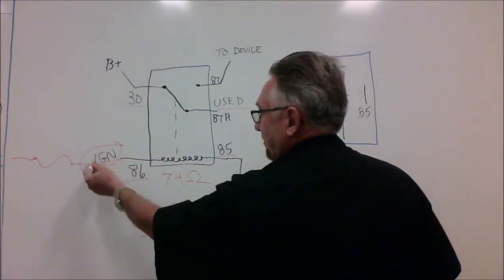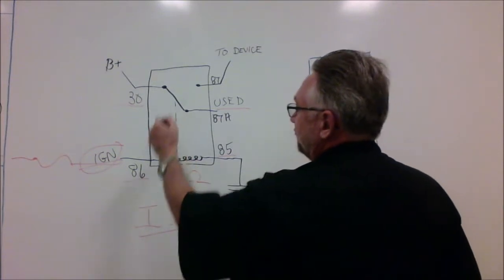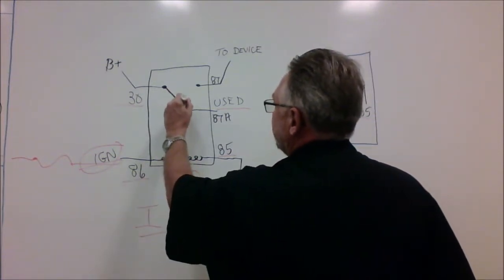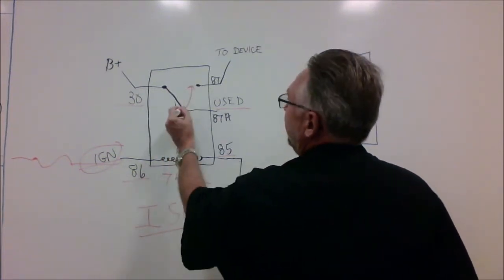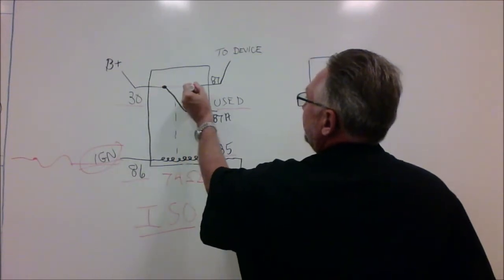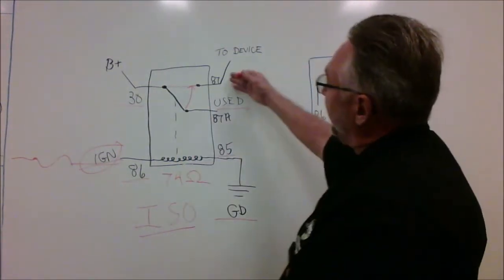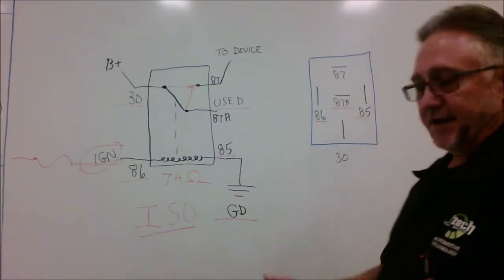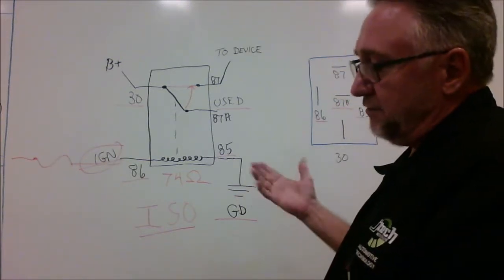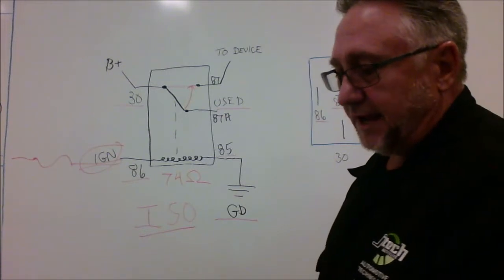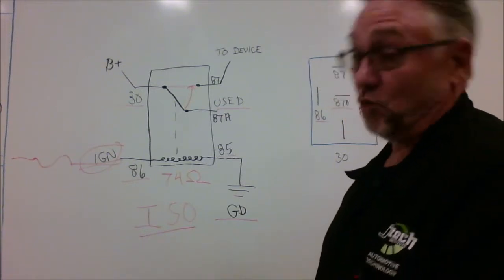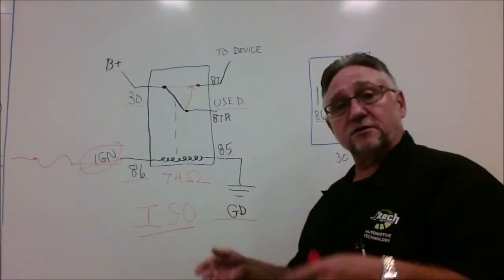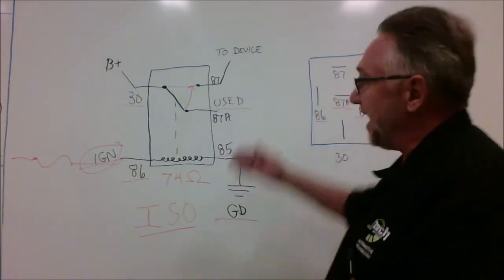These two contacts together. Which 87 then would go out to the device. The device could be your air conditioner, it could be your fan, it could be numerous things. Your windows, power windows, power door locks, power seats. Anything can be controlled by this relay.